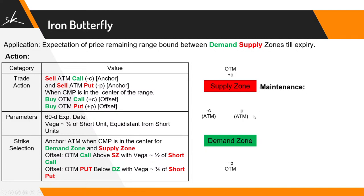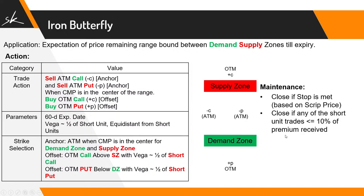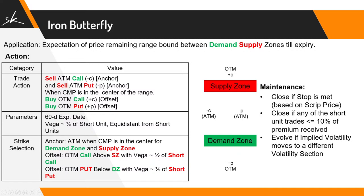For maintenance: if the price hits our stop loss — whether on the demand side or the supply side — we close the position. If any of the short units start trading under 10% of the premium collected (for example, if we collected 30 rupees, once it reaches 3 rupees), it's better to close the position rather than holding for extra days just to make that remaining 3 rupees. In case the implied volatility changes, we can also evolve the strategy.